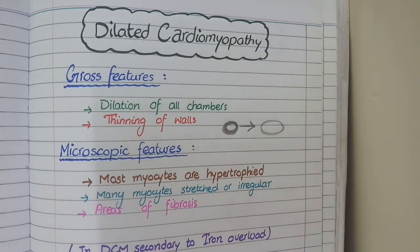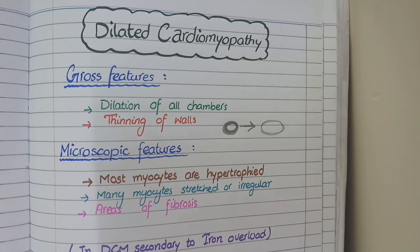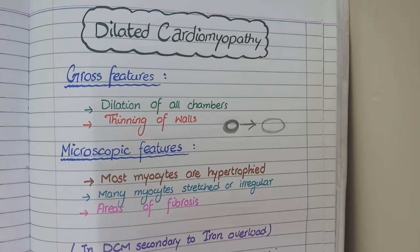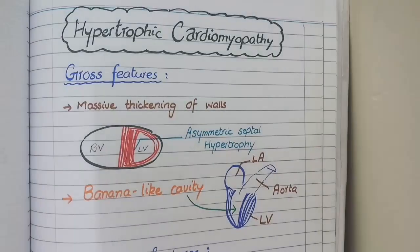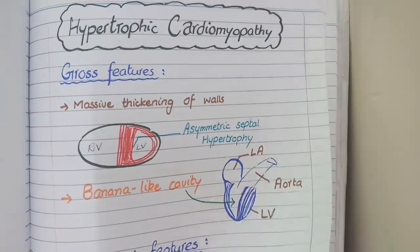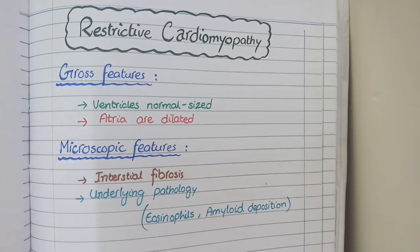In this video, we will discuss the pathological features of all types of cardiomyopathies. Cardiomyopathy is the disease of heart muscle itself that can result in heart failure. Depending upon the pathological features, it can be divided into three types: dilated cardiomyopathy, hypertrophic cardiomyopathy, and restrictive cardiomyopathy.